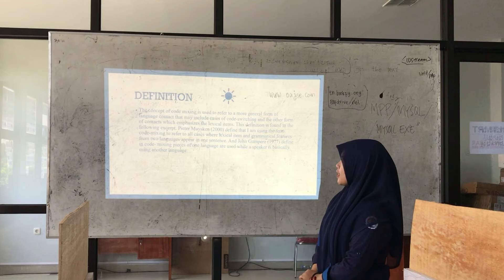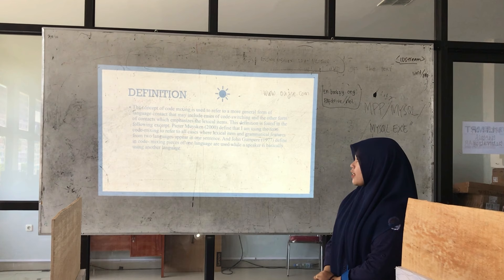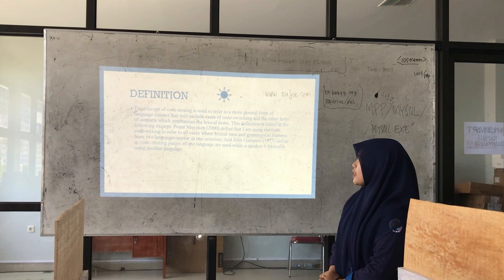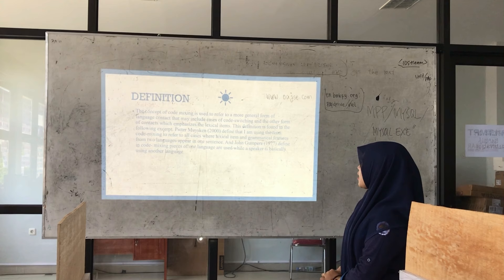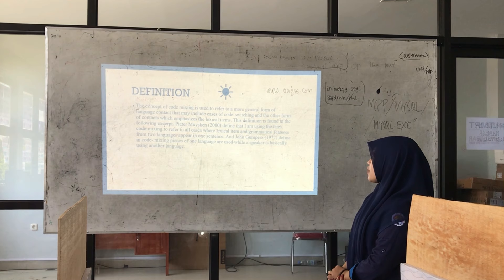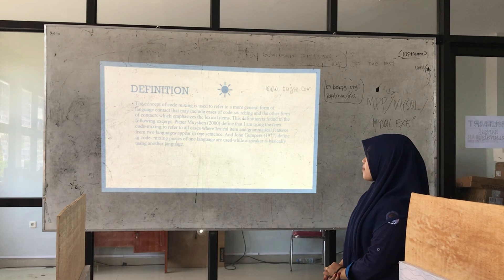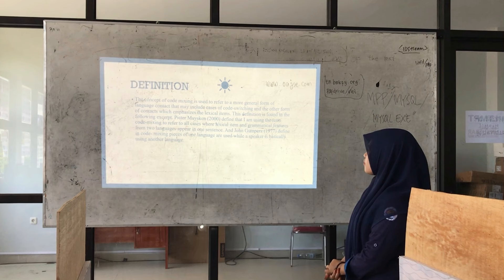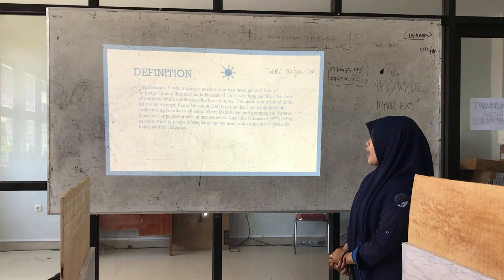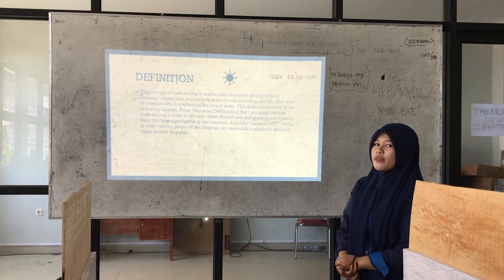Definition. The content of code-mixing is used to refer to a more general form of language content that may include cases of code-switching and other forms of content which emphasize lexical items. Defining that: 'I am using the term code-mixing to refer to all lexical items and grammatical features from two languages apart in one sentence.' And John Krampers defining: 'In code-mixing, pieces of one language are used while a speaker is basically using another language.'